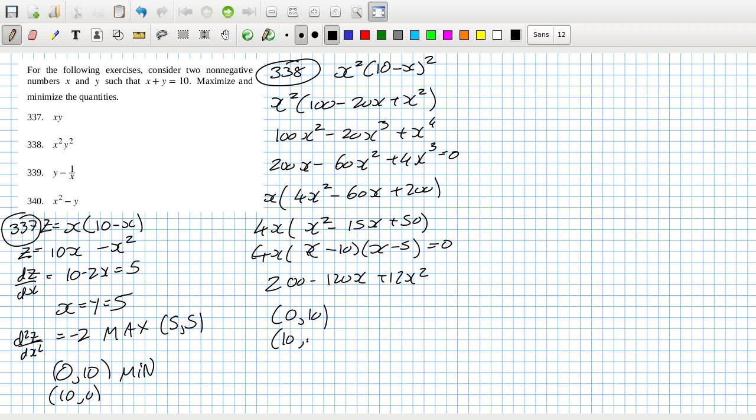So we can have 0, 10, 10, 0, which is basically the same thing. And then 5, 5.